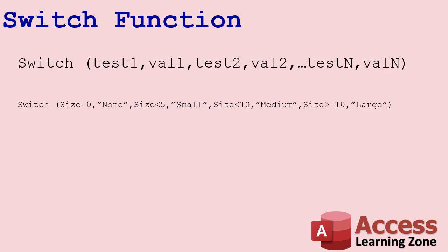Now the switch function pretty much works the same way, but it's just a whole lot easier to read and to write. Here it is: you've got test one, then value one, test two, value two, and so on. You can add pretty much as many of these as you want. I think the maximum length of the entire function can't be more than 255 characters — so that's pretty big.